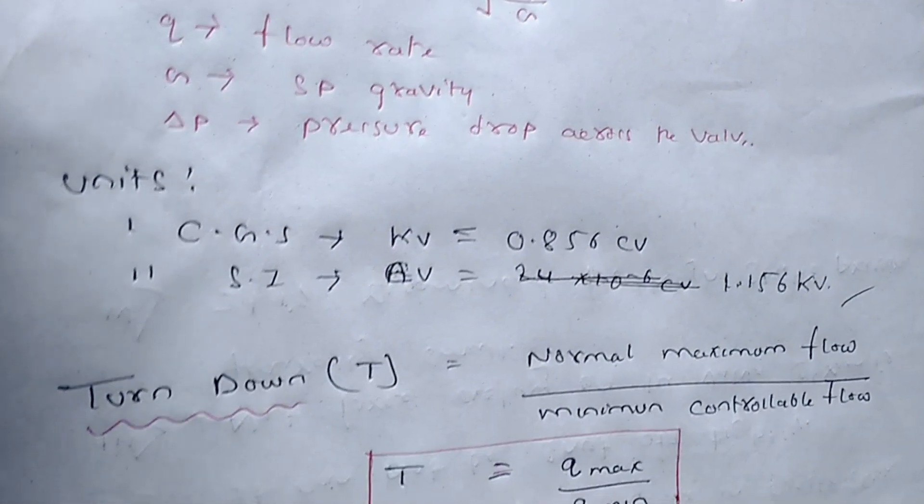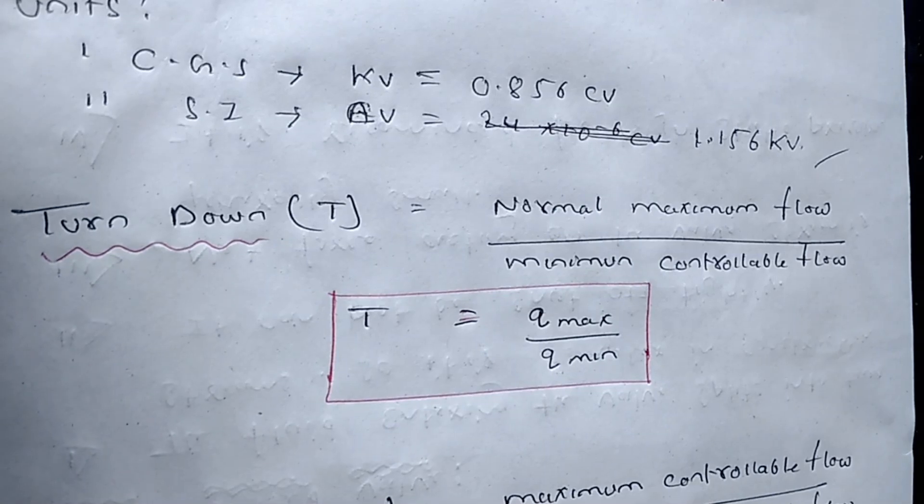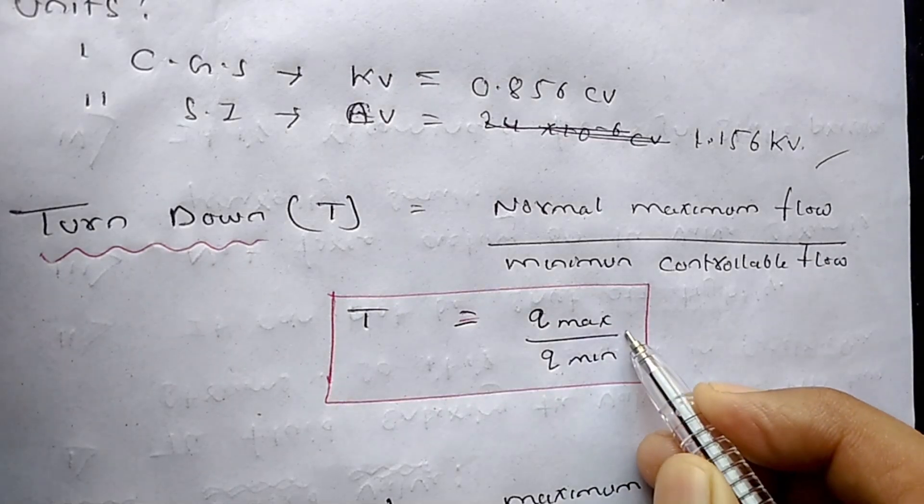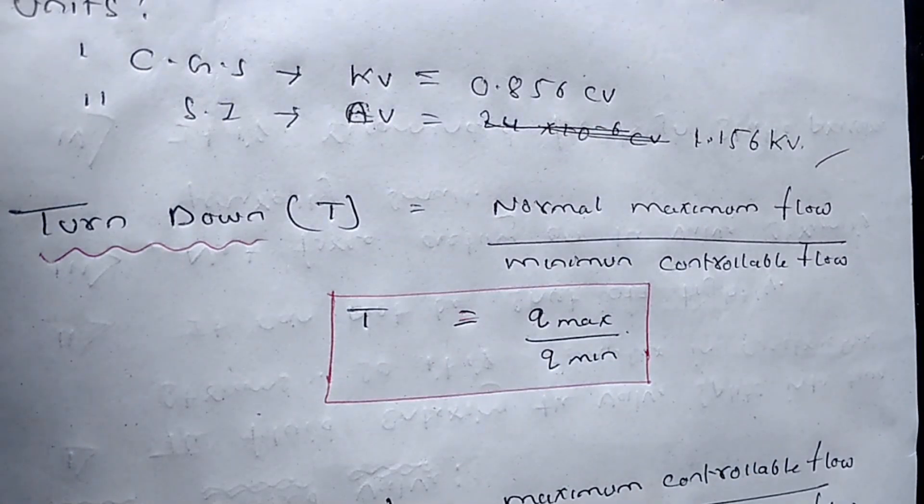And now move to the turndown ratio. What is the turndown ratio? Turndown ratio is the ratio of normal maximum flow by minimum controllable flow. So it is denoted by T equals Qmax by Qmin.